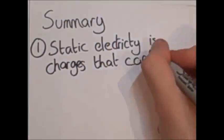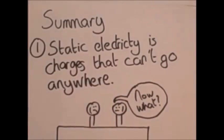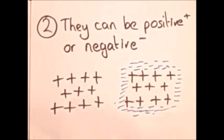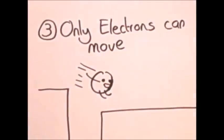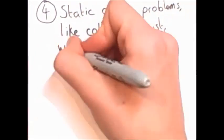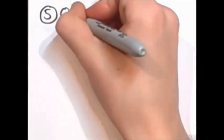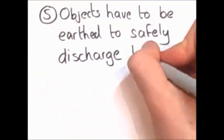Summary. 1. Static electricity is charge that can't move anywhere. 2. They can be positive or negative. 3. Only electrons can move. 4. Static causes problems like collecting dust, wrecking your hairstyles, and electric shocks. 5. Objects have to be earthed to safely discharge them.